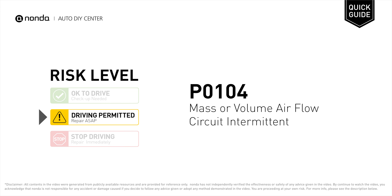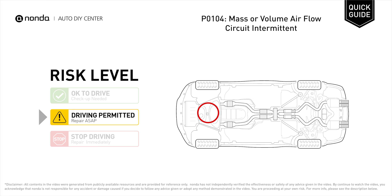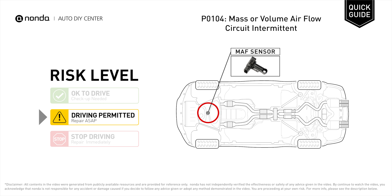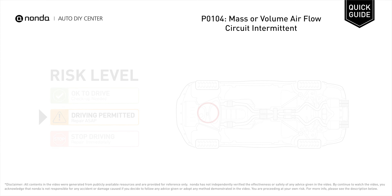P0104 is a diagnostic trouble code for mass or volume air flow circuit intermittent. Under this circumstance, short distance driving is permitted but your vehicle should be repaired ASAP. P0104 means that the electrical circuit of the MAF sensor produces inconsistent, erratic, or irregularly high output voltage signal to the engine control unit.